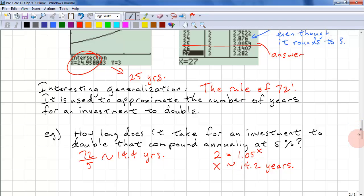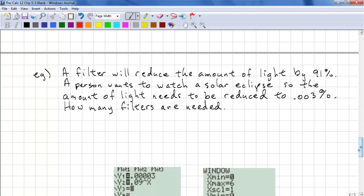Let's look at another type of problem. A filter will reduce the amount of light by 91%. A person wants to watch a solar eclipse. So, the amount of light needs to be reduced to 0.003%. How many filters do we need to make this happen? First of all, our target value is 0.00003. We need two more zeros because this is a percentage. We need to divide by 100.